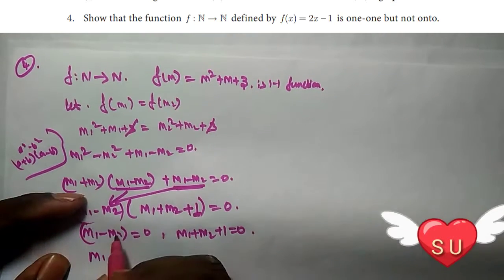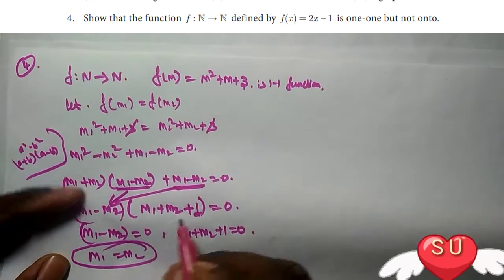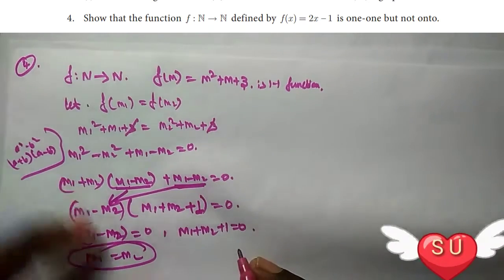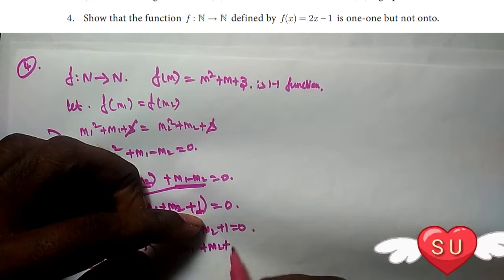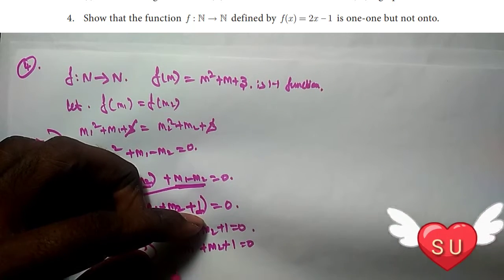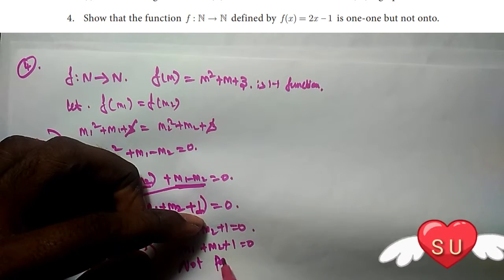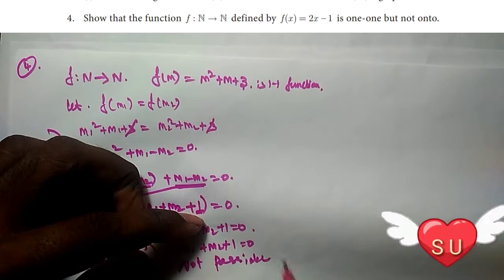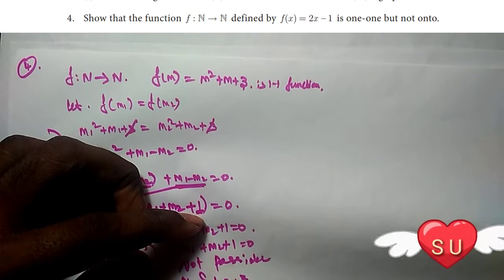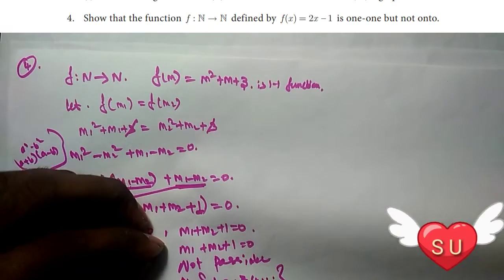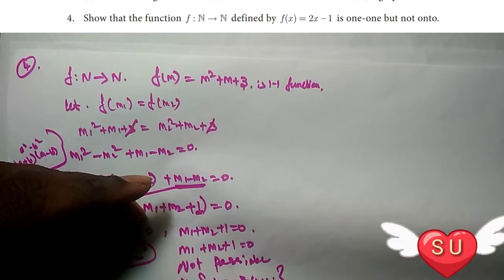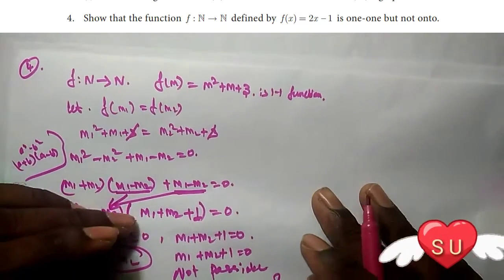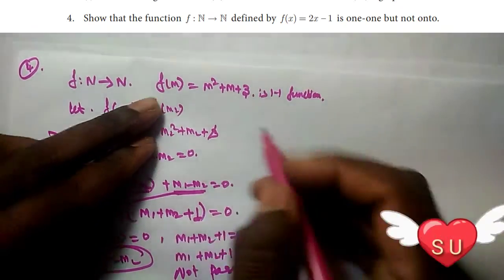So either m1 minus m2 equals zero, or m1 plus m2 plus 1 equals zero. The second case, m1 plus m2 plus 1 equals zero, is not possible because m1 and m2 are natural numbers (1, 2, 3, 4, and so on).